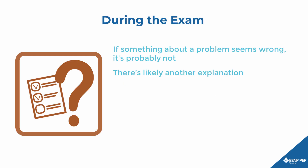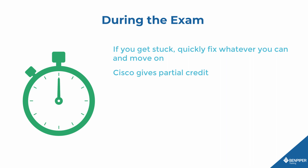During the exam, if something about a question seems wrong, it's probably not. If a multiple-choice question seems to have no correct answer or a simulation gives output you know is wrong, remember that thousands of people have seen the same question and likely already reported it. Don't get frustrated — assume there's another explanation, because chances are there is. Saying 'I'm right and Cisco is wrong' is not going to get you any points. Humility goes a long way. If you've been working on a simulation question for several minutes and get stuck, quickly do whatever you can to solve the problem, even if it's just a wild guess, and then move on. Cisco does give partial credit, so partial credit is better than no credit — and a wild guess may even turn out to be right.